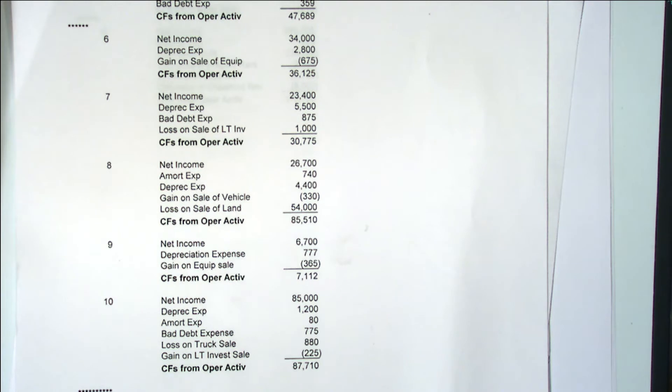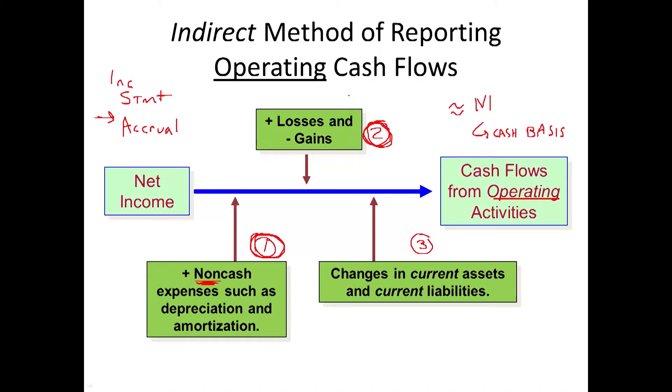Any questions on number six, seven, eight, nine, or ten? This is our longest session of all the sessions, and to me this is the most complicated session. So if you can get last session and this session, you are well on your way to being able to do a cash flow statement. No questions on six through ten? We have one more set of changes we have to make.